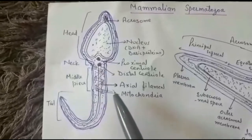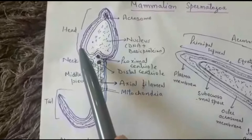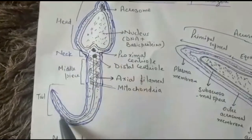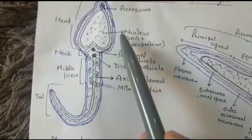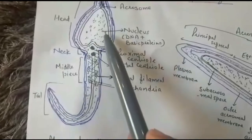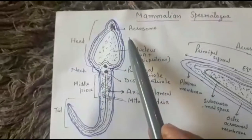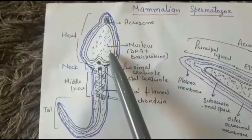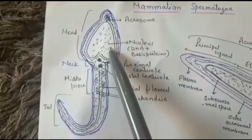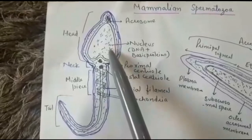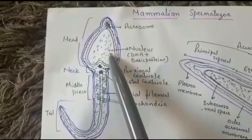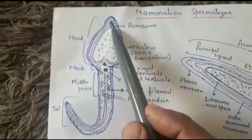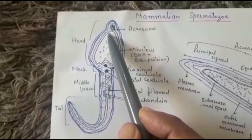Mammalian sperm, as we have studied earlier, is divisible into four parts: head, neck, middle piece, and tail. The head comprises a highly condensed nucleus and acrosome. The nucleus is covered by a nuclear envelope and mainly contains condensed DNA and basic proteins. Acidic proteins, RNA, and nucleolus are absent.